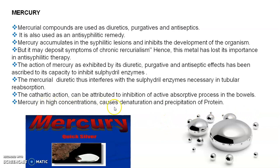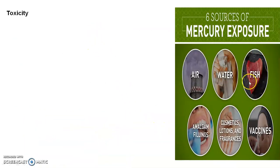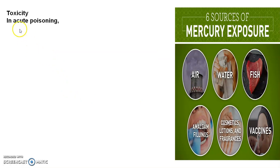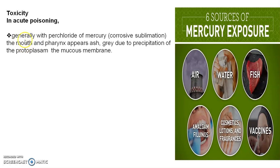Mercury in high concentration causes denaturation and precipitation of protein. Toxicity may be due to air, water, fish, amalgam fillings, cosmetic lotions, fragrances, and vaccinations. In acute poisoning, generally the perchloride of mercury (corrosive sublimate) causes the mouth and pharynx to appear ash-gray due to precipitation of the protoplasm of the mucous membrane.